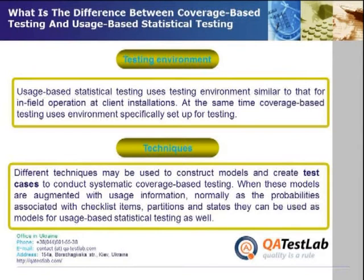Techniques: Different techniques may be used to construct models and create test cases to conduct systematic coverage-based testing. When these models are augmented with usage information — normally as the probabilities associated with checklist items, partitions, and states — they can also be used as models for usage-based statistical testing.